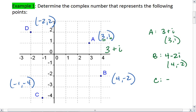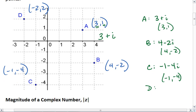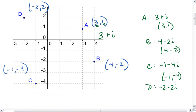c is negative 1 minus 4i, which corresponds to negative 1, negative 4. And d, we see, is negative 2 plus 2i, which corresponds to that ordered pair of negative 2, 2.